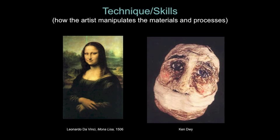Often we are impressed by images we can recognize and amazed at the skill of artists who can render images of life so well. Leonardo's Mona Lisa is often seen as the epitome of artistic skill. However, sometimes people who have no artistic training make powerful art. The artwork on the right was made by Ken Dwye, who was incarcerated in prison. The only material he had to work with was toilet paper. Using this common material, Dwye was able to create a very expressive artwork.